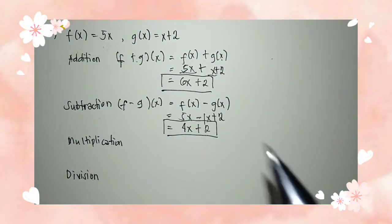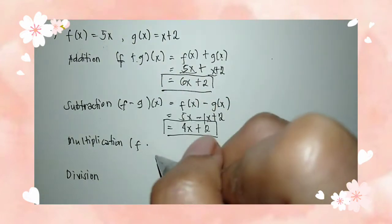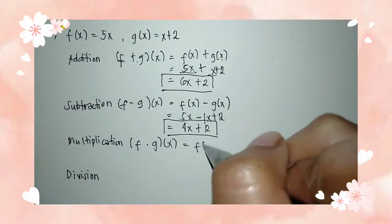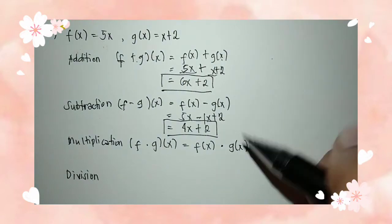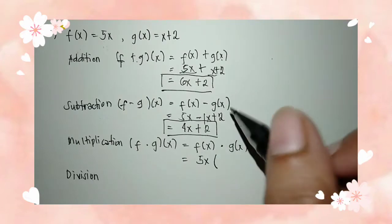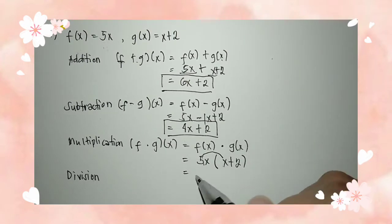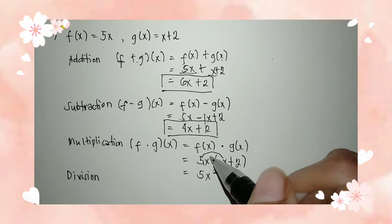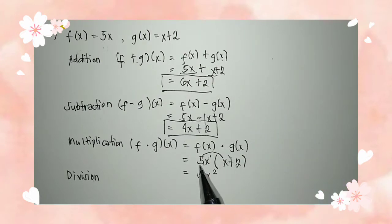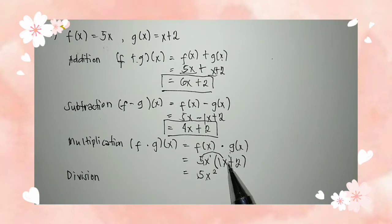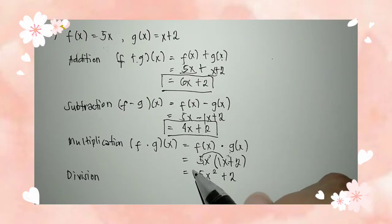Let's move on to multiplication of functions. We have f times g of x is equal to f of x times g of x. So we have 5x times x plus 2. Using the distributive property, we're just going to multiply 5x by x and by 2. We have 5x times x is equal to 5x squared — remember, when multiplying variables we add their exponents, so x to the 1 times x to the 1 gives x squared, since 1 plus 1 equals 2. Then 5x times 2 gives 10x.